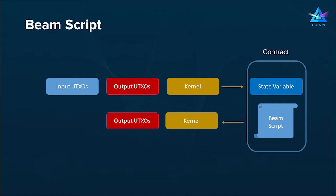In this specific implementation, the kernel is going to consume the input UTXOs and instead of creating new output UTXOs, it will update a state variable inside the node. This state variable can be part of a contract — a set of state variables — and can have some script related to this contract, which will be able to perform various mathematical operations on these variables. And as a reverse process, as a result of the script, new output UTXOs will be created and sent out as new transactions.